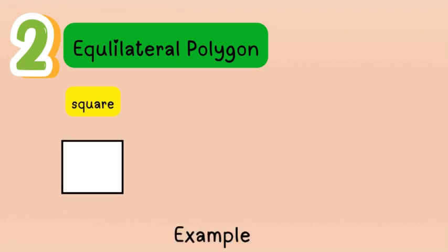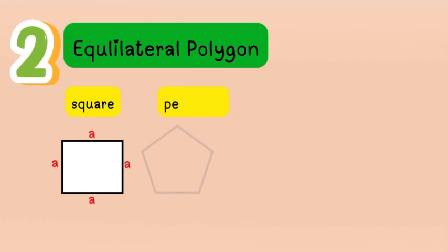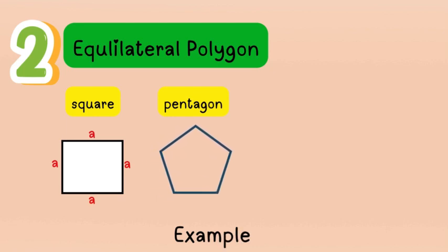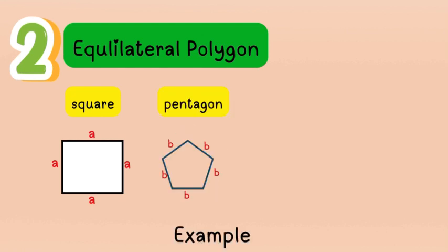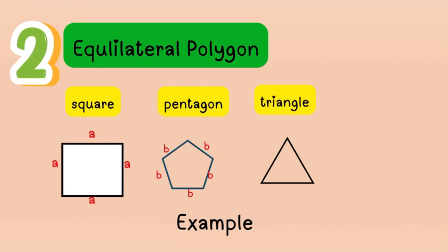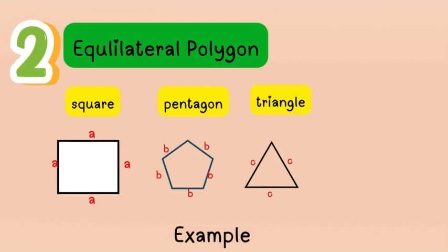Examples of equilateral polygons: first we have a square, which has equal sides — we can label each side as 'a'. Next, a pentagon has five equal sides, labeled 'b'. A triangle can also have equal sides, labeled 'c'. These are just some common examples.